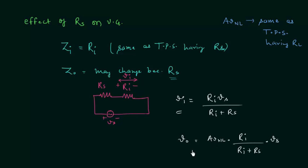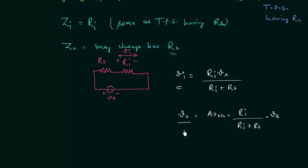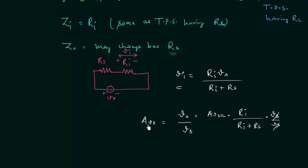We will now divide both sides by VS. This gives us VO divided by VS on the left-hand side, and on the right-hand side we have AVNL times RI divided by RI plus RS, with VS canceling out. We already know that VO divided by VS is the overall voltage gain AVS. In the last lecture, when we only had the load resistance, the voltage gain was the loaded voltage gain AVL, but in this case the voltage gain is AVS, the overall voltage gain.